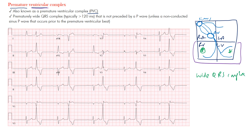Wide QRS complexes — meaning greater than or equal to 120 milliseconds. Because the beat originates from the ventricles, you often don't see a P wave. No P waves are present. In some cases, such as ventricular tachycardia with retrograde conduction, you may see a P wave, but typically if there is one it's buried within the QRS complex or may appear as an abnormality in the ST segment.